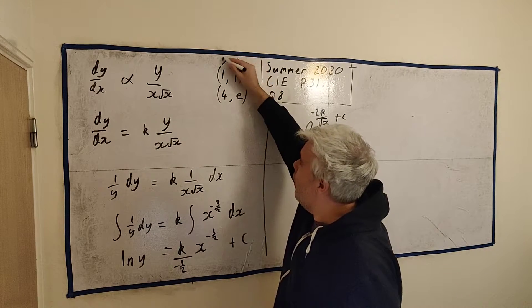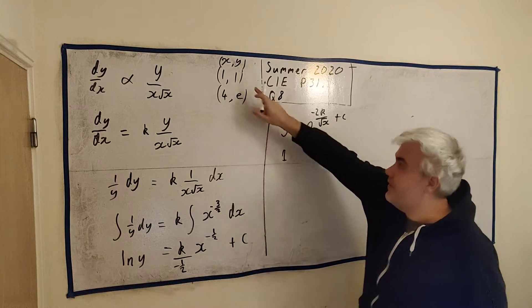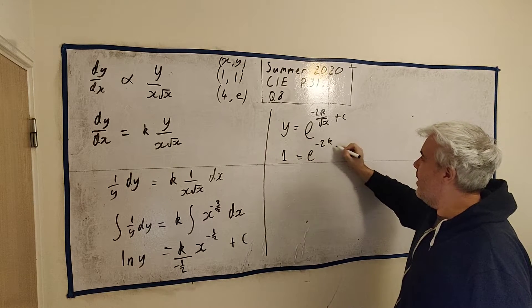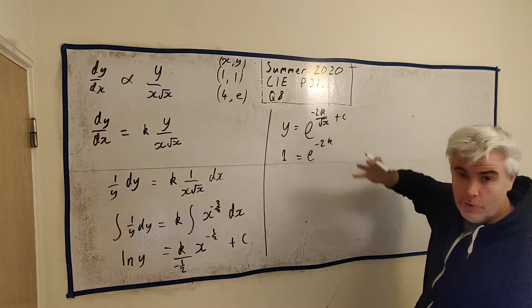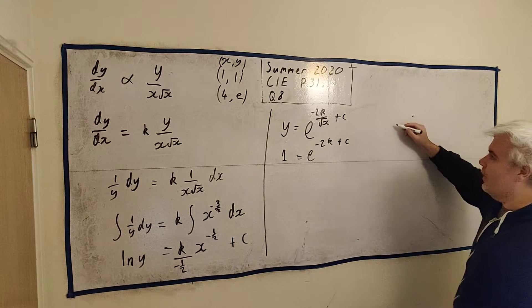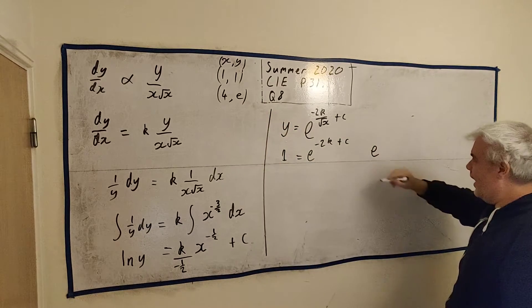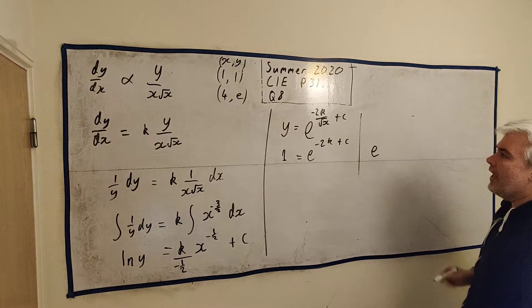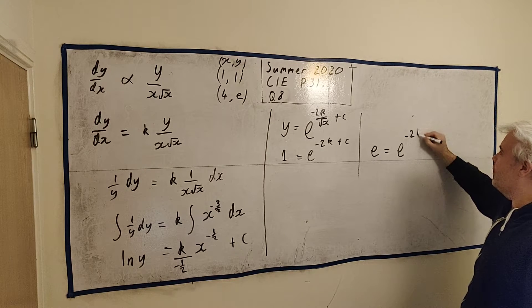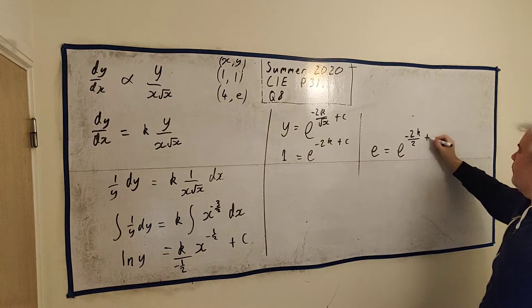So, we know that y is equal to 1. And x is equal to 1 at the same time. So, I can write 1 is equal to e to the power of minus 2k divided by 1. Square root of 1 is 1. So, that's nothing. Plus c. And then I can also write, I'm replacing this one now. E is equal to e to the power of minus 2k over the square root of 4, which is 2, plus c.